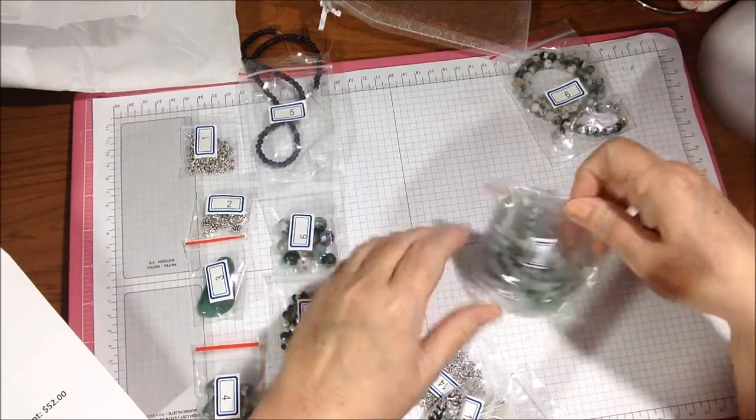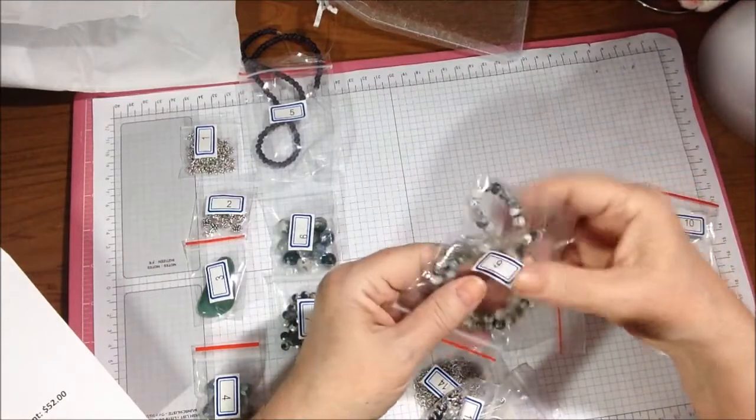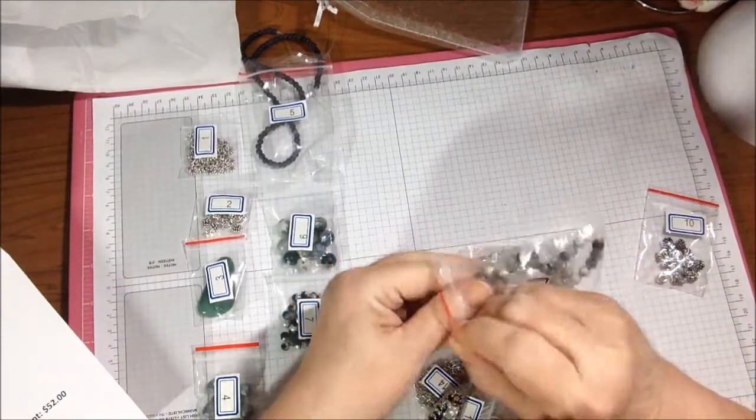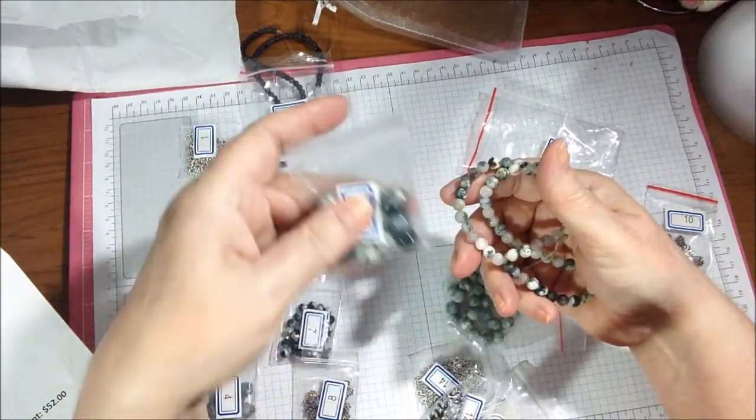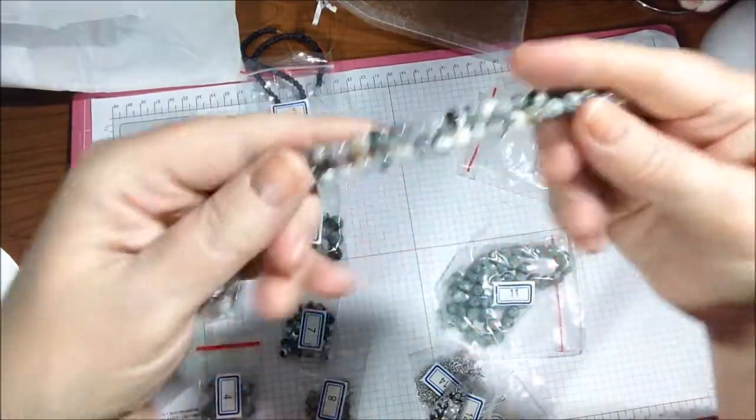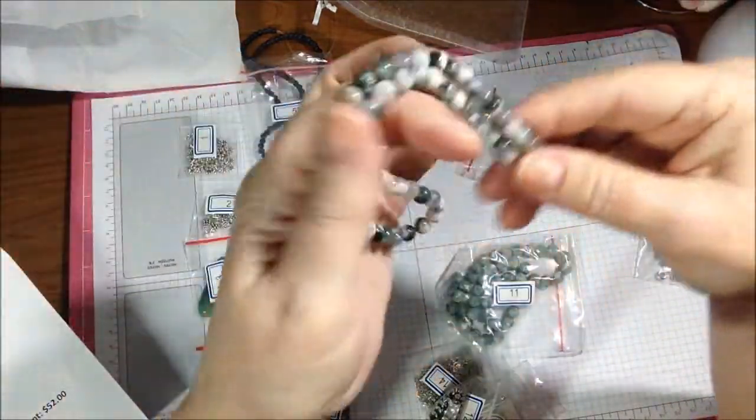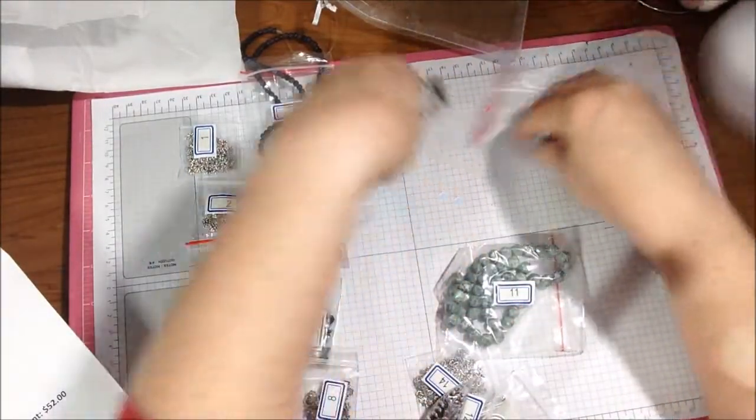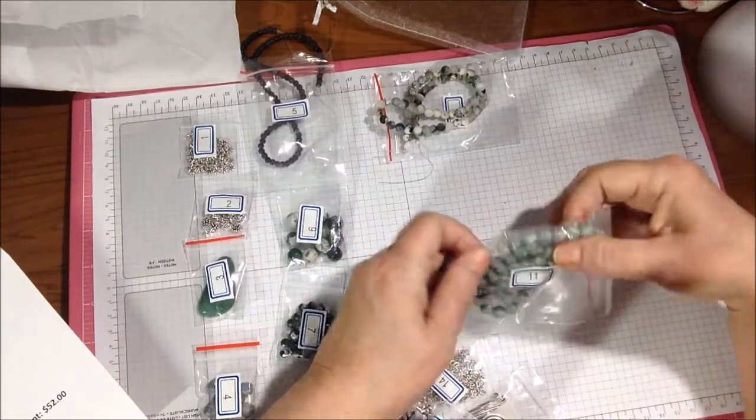Then, where am I here, okay. The next one is number nine and these are 15 inch strand, six millimeter tree agate. So we have the 10 millimeter in this pack, now we have the six which is much smaller, and these actually have less green and more white and gray on them.